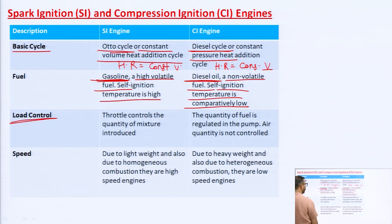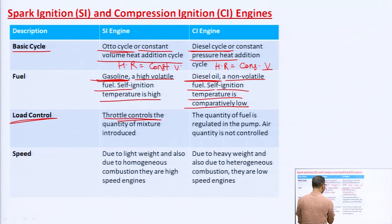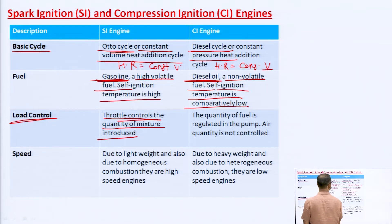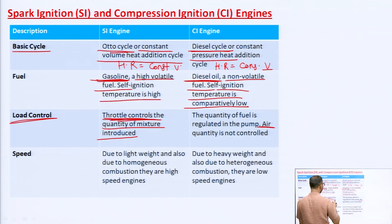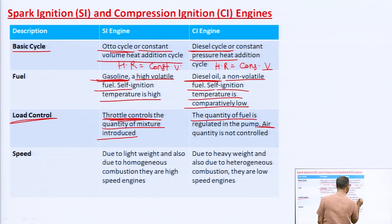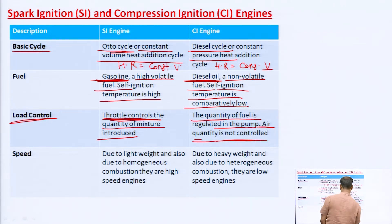Regarding load control: in the SI engine, load control is throttle control — it controls the quantity of the air-fuel mixture introduced during the suction stroke. In the case of the CI engine, only air is introduced during the suction stroke and fuel is injected later. So load control here is achieved by regulating the quantity of fuel in the fuel pump, and the air quantity is not controlled.